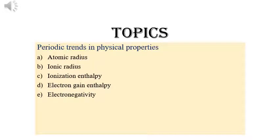In this video we are discussing some of the important concepts and properties related to elements and how they change in a period and group. They are atomic radius, ionic radius, ionization enthalpy, electron gain enthalpy, and electronegativity.